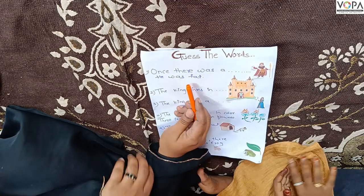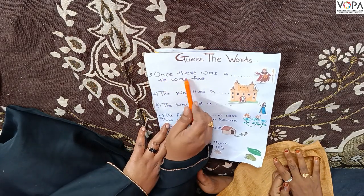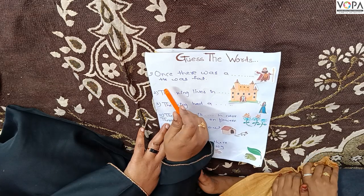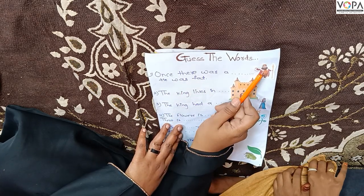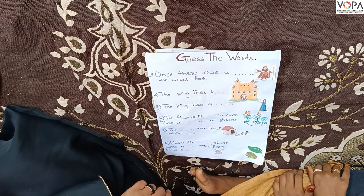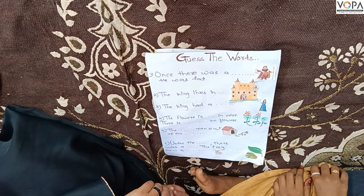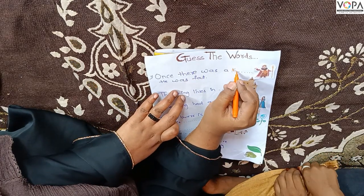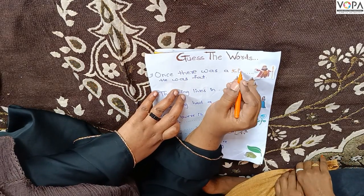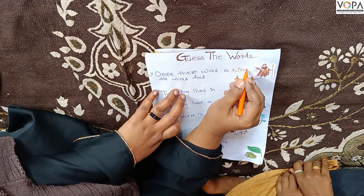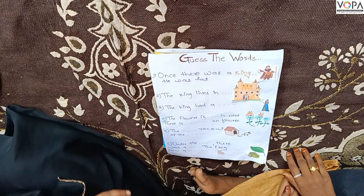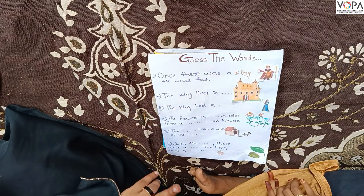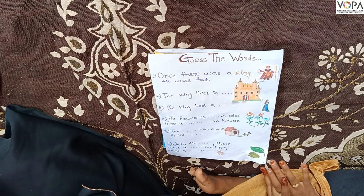First sentence: Once there was a blank — he was fat. Who is this? King. How do we write it? K-I-N-G. I'm going to write it. Next time you have to write it for practice. Okay? King.